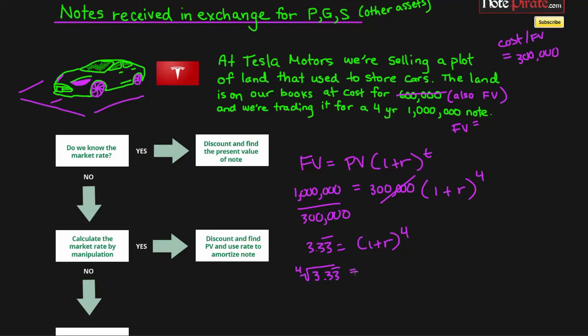So we have 1.3512 equals 1 plus r, and then we get rid of the 1, and we're left with r equals 0.3512. So 0.3512 is the same as 35.12 percent. The market rate is 35.12 percent, and that is the rate at which you amortize the discount.